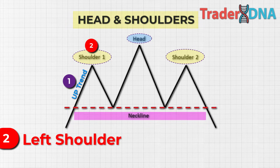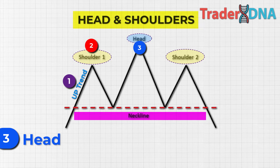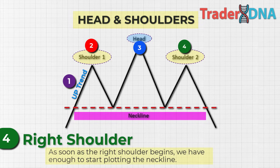Step three — head: now that the left shoulder is formed, the market makes a higher high creating the head. Despite this upward movement, buyers can't push the price much higher. Step four — right shoulder: the right shoulder is where everything comes together. It signals that buyers might be getting tired and a market reversal could be on the horizon. As soon as the right shoulder begins we can start drawing the neckline.